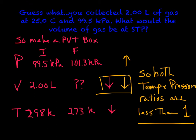So make yourself a PVT box. You've got pressure, volume, temperature. From the problem, my initial conditions: we collected two liters of the gas at 25 Celsius, 99.5 kilopascals. So my initial pressure is 99.5 kilopascals, my initial volume is 2.00 liters, and my initial temperature converted to Kelvin is 25 plus 273, or 298 Kelvin.